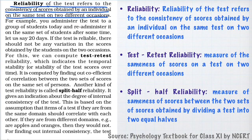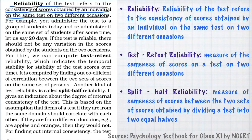Reliability is of two kinds. The first is test-retest reliability, where the same test is given on two different occasions with a time gap — to the same person or the same group of individuals. For example, I give you a test today and then after a few days I give you the same test.